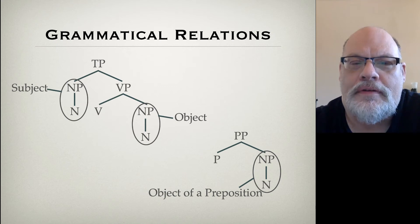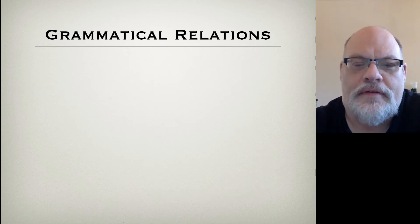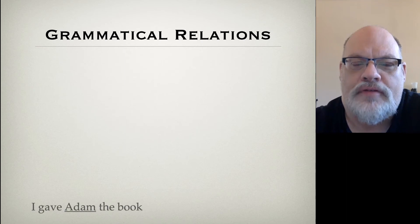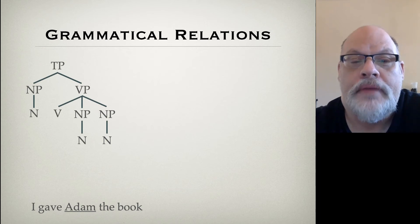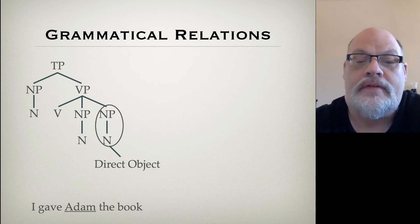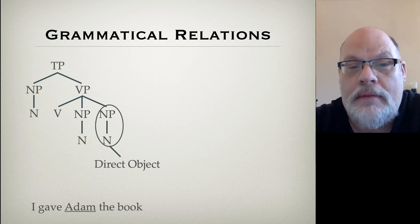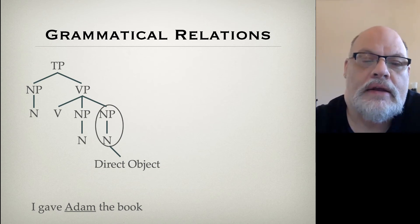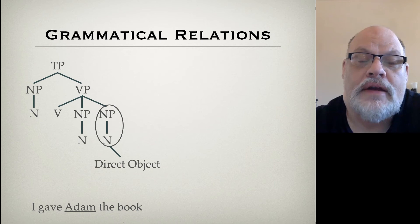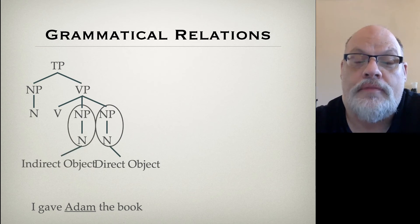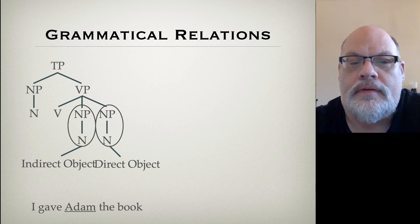Now, indirect objects and direct objects in ditransitive verbs, as we've mentioned, is much trickier. So first of all, let's look at the case where we have two noun phrases: 'I gave Adam the book.' In that case, the noun phrase that's dominated by a VP and preceded by another NP is the direct object. And the noun phrase that comes immediately after the verb but is dominated by the VP — that's the indirect object. So in 'I gave Adam the book,' Adam is the indirect object and the book is the direct object.